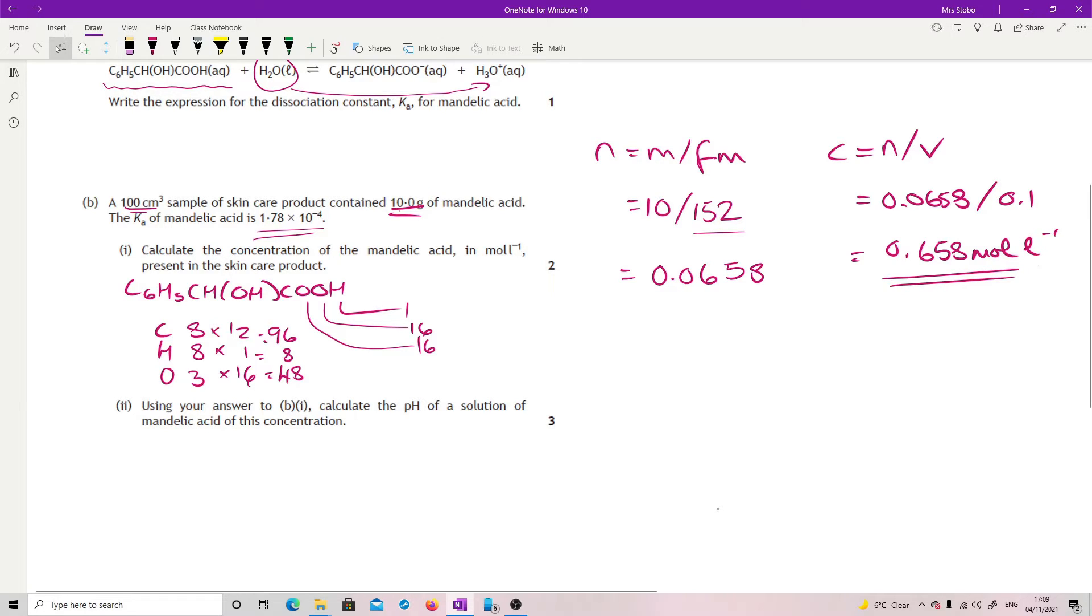Now technically, you don't actually have to write moles per liter because it was in the stem of the question. But I think it's probably good practice still considered to put that in. In the mark scheme, it would allow you to have gone to 0.66. It also would have been happy if you'd gone 0.6579. So if you'd rounded further back or even further back at that.